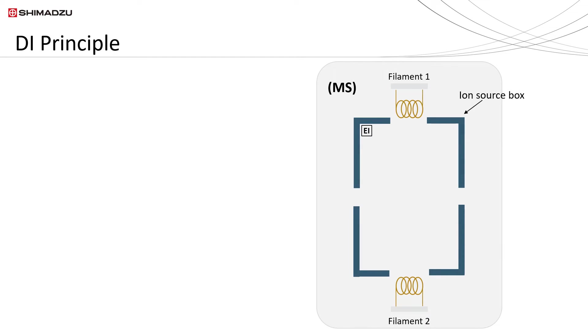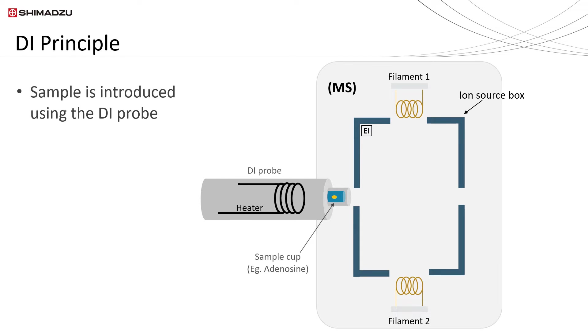Here is the principle of DI. Sample is placed in a sample cup and introduced using the DI probe which will be heated once it is inserted into the mass spectrometer.